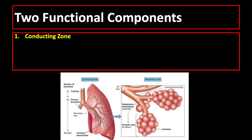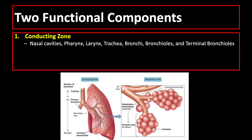The first component is the conducting zone, which cleanses and humidifies inspired air and provides conduits for air movement to and from the alveoli. It includes the nasal cavities, pharynx, larynx, trachea, bronchi, bronchioles, and down to the terminal bronchioles.